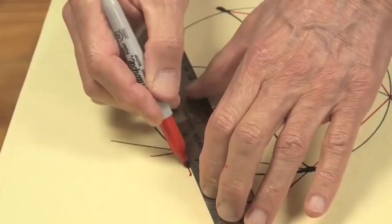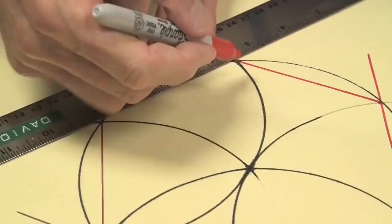Ruler and compass constructions are something else. There we are, a beautiful hexagon. And of course, if I just connected three of the points, like these three, I would get a regular triangle.